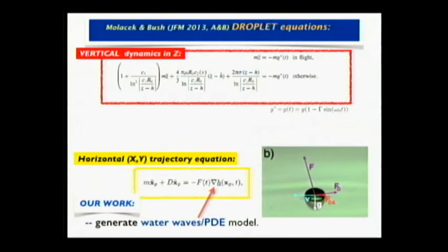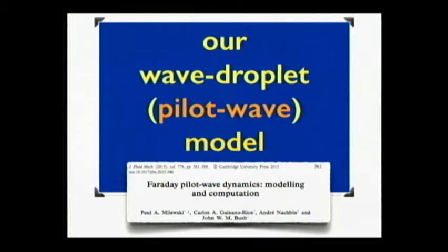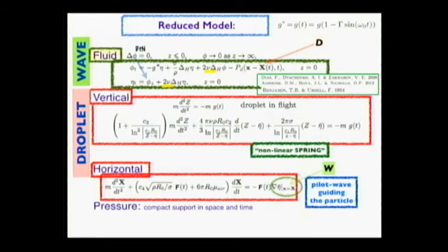Let me show you the equations from this paper we got last year, developed from John's group. Here is horizontal dynamics. We add vertical dynamics so you can track the droplet on the plane and as it jumps. We connected it with this wave equation. This pressure term shows the presence of the droplet. The droplet never touches the fluid, so we model it as a pressure term generating waves. And here we see the wave, eta, guiding the droplet.